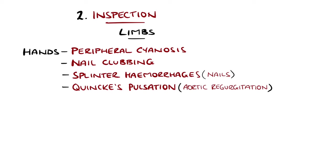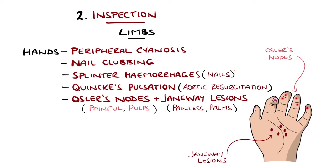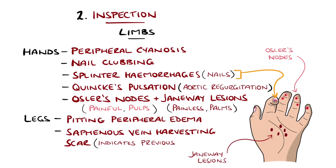Osler's nodes and Janeway lesions are typically found on the hands. Osler's nodes are painful purple nodules on the pulps of the fingers, that is the fleshy distal portion, while Janeway lesions are pain-free macules typically on the palms. Presence of peripheral oedema is a sign covered more in palpation, but can be visible on inspection. This is generally best seen at the level of the ankle and foreleg, and inspecting the legs may also reveal scars indicating previous harvesting of the saphenous vein as part of bypass surgery.